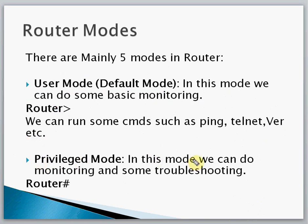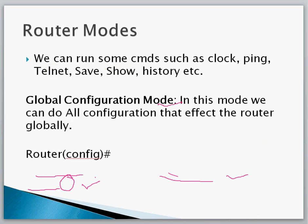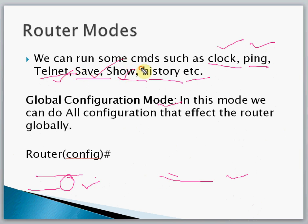The next mode is Privilege Mode. In this mode we can do monitoring as well as troubleshooting. The prompt shows the router name followed by the '#' symbol. Commands available here include: clock, ping, telnet, save, show history. For example, if you want to see the clock, ping another router, telnet, save the configuration, or view command history.